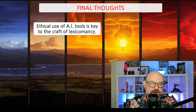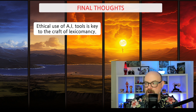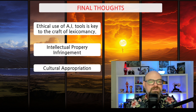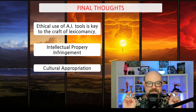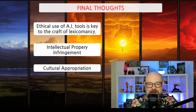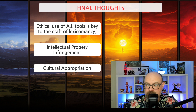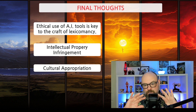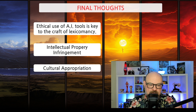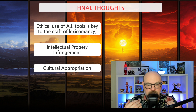Ethical use of AI tools is the key to the craft of lexicomancy. This involves being aware of the changing environment for intellectual property infringement, as well as issues like cultural appropriation. For example, when using a tool like MidJourney, you have to think carefully about using the prompt 'in the style of'. While this is not a technical copyright infringement, you want to be careful of using the style of a living artist, or even a dead artist, particularly because of the duration of copyright. However, 'in the style of' could refer to a past historical art movement, which is a more generalized thing. Being careful here is not about hard rules, but guides to thinking about being respectful and operating within the law.